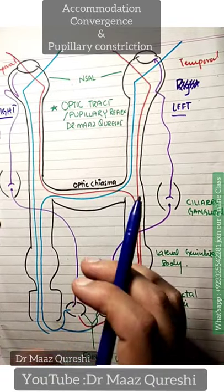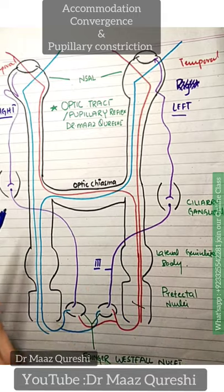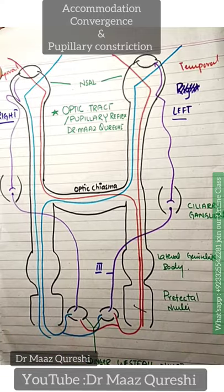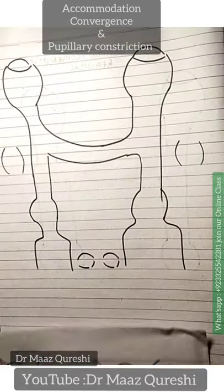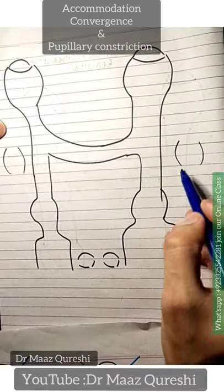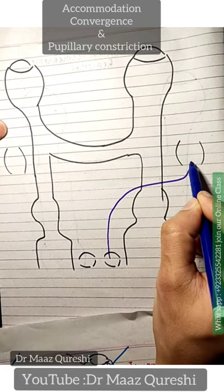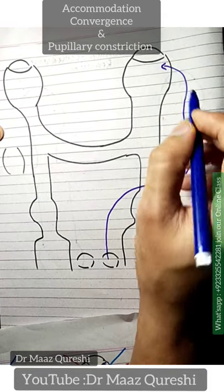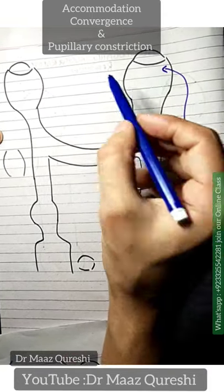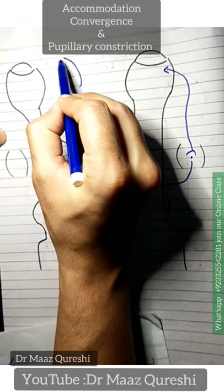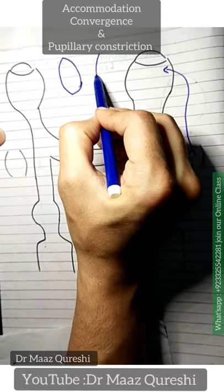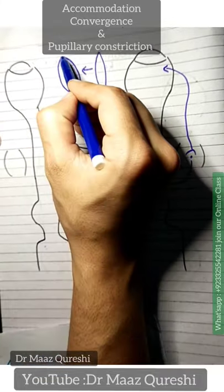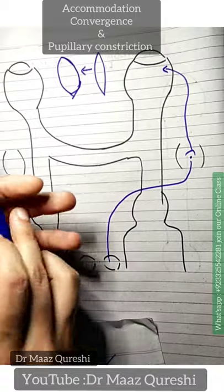The suspensory ligaments activate, contract and relax, and the convexity of the lens increases — this is how the accommodation reflex takes place. The Edinger-Westphal nucleus fires and this is relayed in the ciliary ganglion; the suspensory ligaments give more convexity to the lens, so now you can see the near image. This is your accommodation reflex.